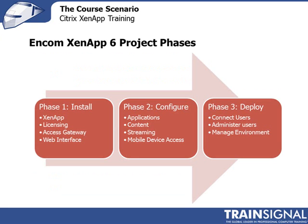So what is Encom's ZenApp 6 project approach? Phase one: we're going to install ZenApp 6 and make sure licensing is working. We're going to deploy the access gateway and ensure remote secure access has been granted. We're also going to configure the web interface so that local or WAN users can connect to a web page and launch applications that way.